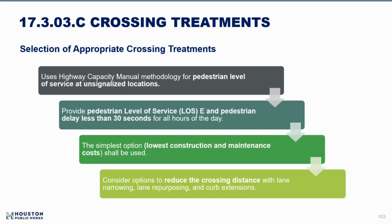The process is two-part: first defining where crossings are acceptable (the 'where'), then determining what those crossings need to look like to provide a safe crossing (the 'what'). The methodology uses the Highway Capacity Manual method for pedestrian level of service at unsignalized locations, targeting a pedestrian level of service of E with a pedestrian delay of less than 30 seconds for all hours of the day. The simplest feasible option that achieves those metrics is preferred.